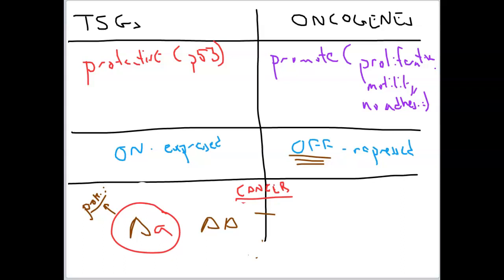Individual number two still has the working allele that still makes protective protein, and will remain healthy, at least for the time being. So although both individuals were born healthy, the individual on the left was predisposed for cancer because they were essentially only operating on a single functional tumor suppressor gene. The individual on the right was more healthy because they had a two-allele system that allowed them to absorb some buffering of environmental mutations. This idea of predisposition really comes down to the recessive quality of tumor suppressor genes — some people are born with a mutant tumor suppressor allele and are more likely to develop cancer later if the functional wild-type allele becomes mutated.